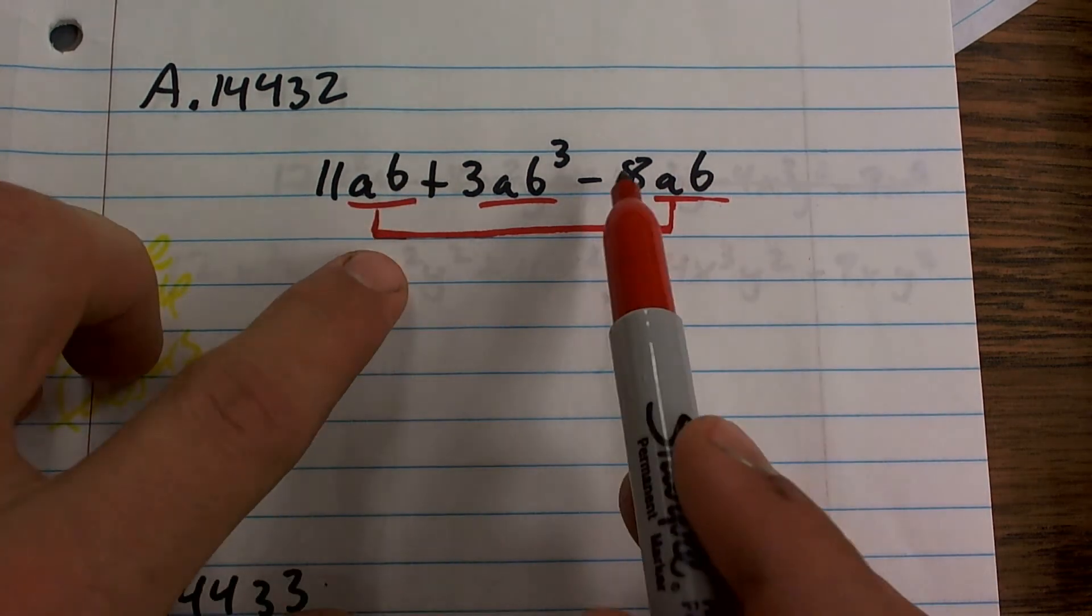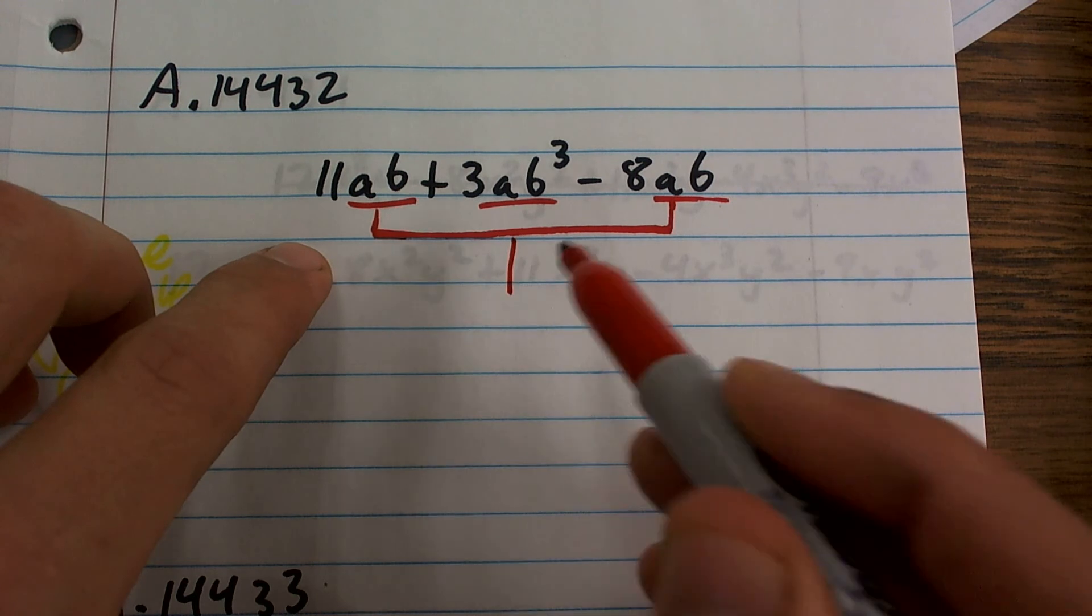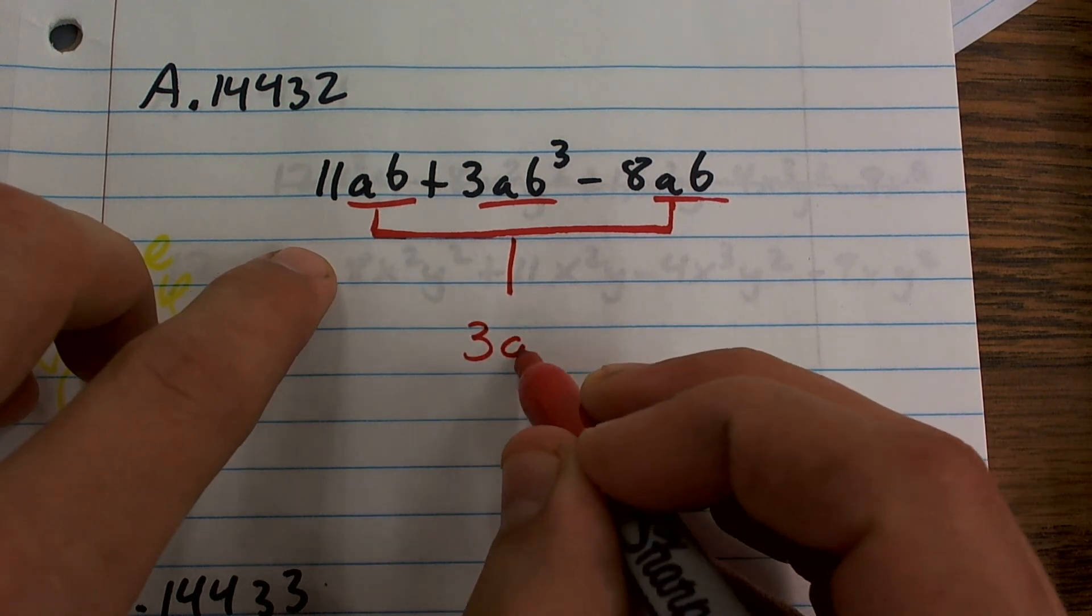What's 11 AB minus 8 AB? That answer is going to give you 3 AB.